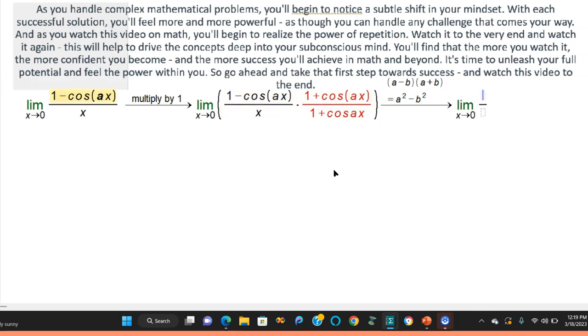You're going to have the limit as x goes to 0, and then you're going to have 1 squared minus cosine squared ax over x times 1 plus cosine ax, this way.